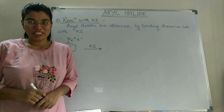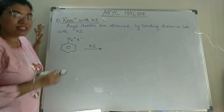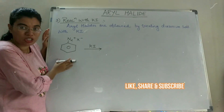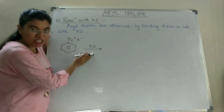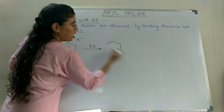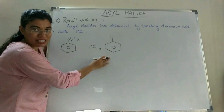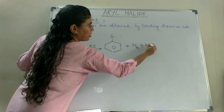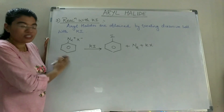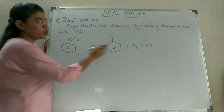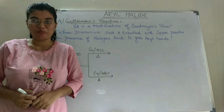The third reaction is the reaction with KI — potassium iodide. This is a very simple reaction. The benzene diazonium salt is reacted with KI. The product obtained is iodobenzene, plus N2 and KX are released. So diazonium salt plus KI gives us iodobenzene.